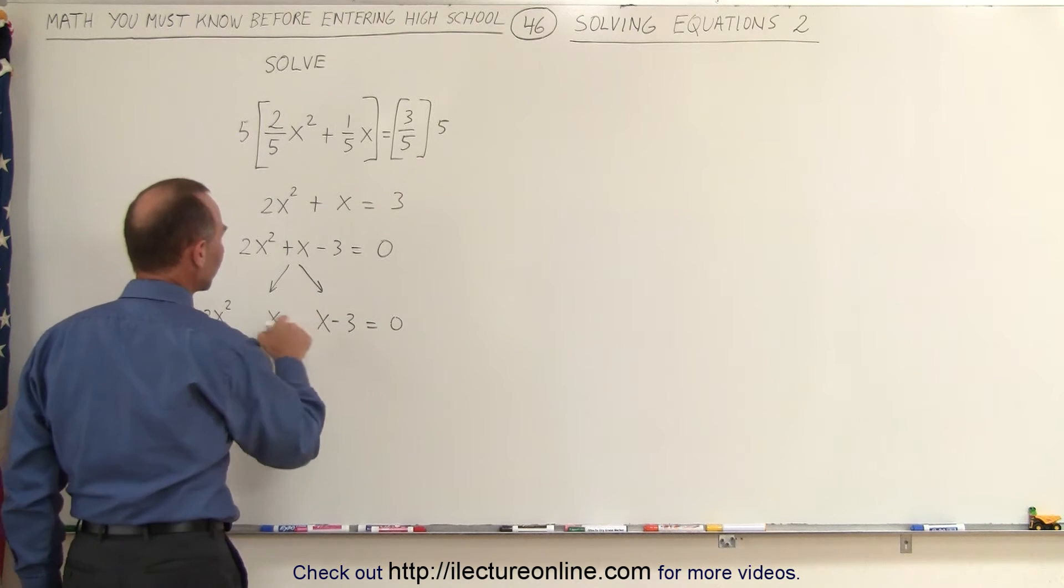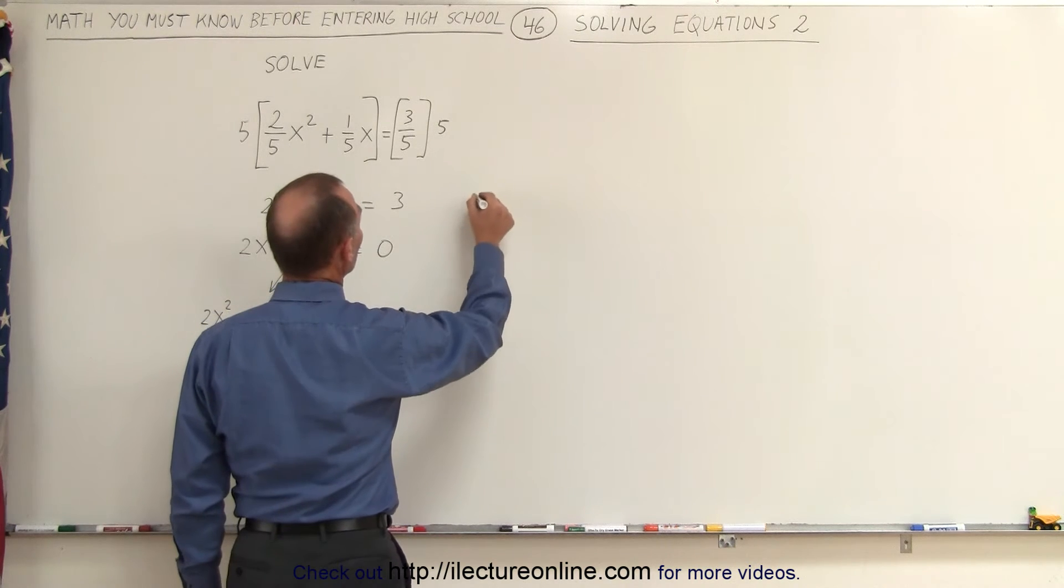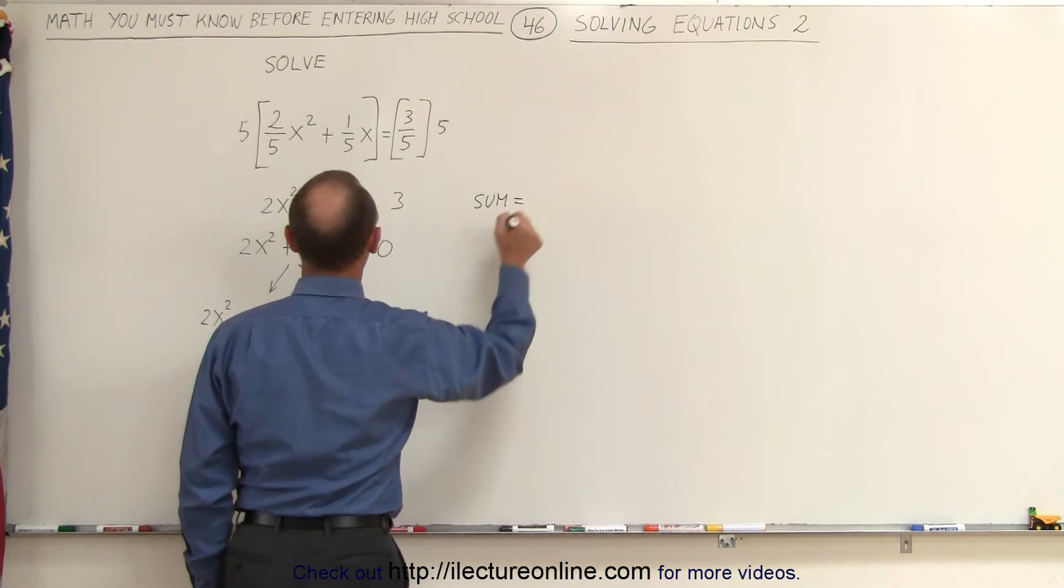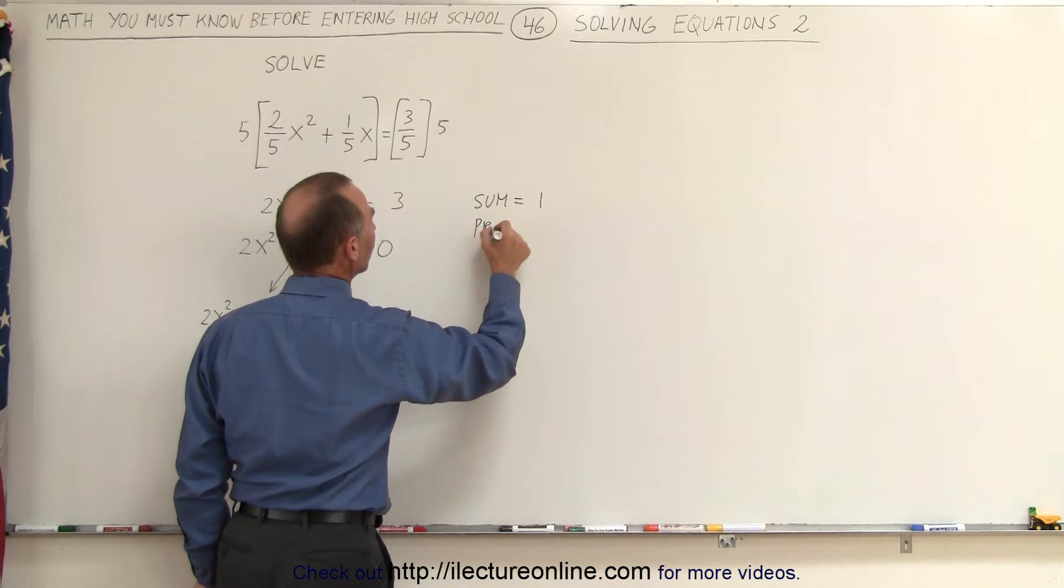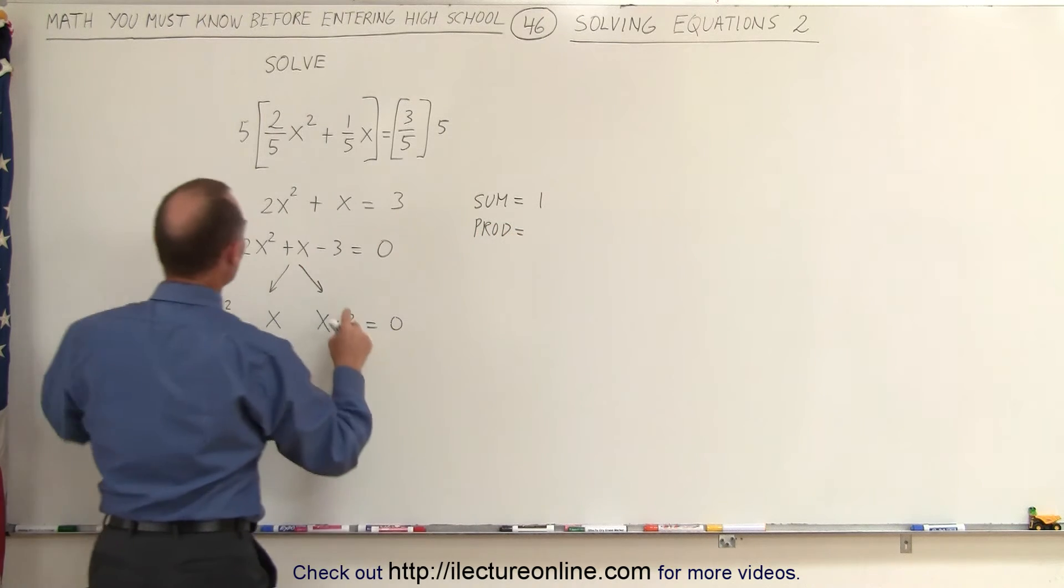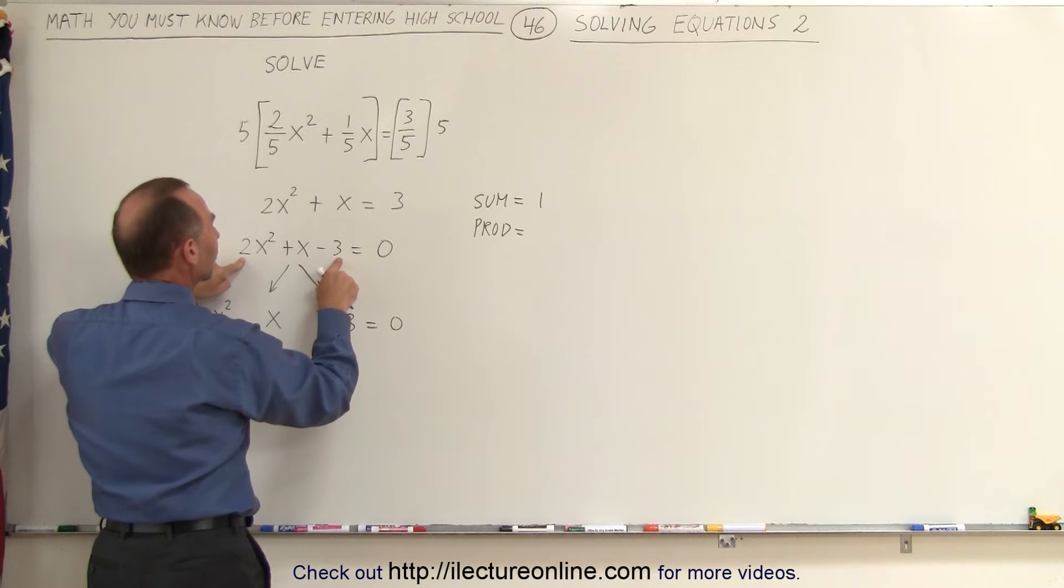Now, what are the coefficients on these two middle terms? Well, that depends. We know that the sum of the two must equal what this is equal to. So the sum of the two numbers must equal 1, and the product of the two numbers must equal the product of the 2 in front of the x squared and the constant here, minus 3. So 2 times minus 3 is minus 6.